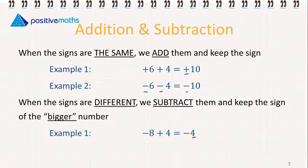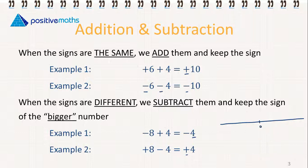We keep the sign of the bigger number. A second example: plus 8 minus 4 — different signs means we subtract and keep the sign of the bigger number, so we keep the plus. The best thing to do when getting familiar with addition and subtraction of integers is to use your number line. Draw a quick number line at the side of your page. For example, if you're saying 2 minus 3 — you start at 2, and subtracting means going to the left: minus 1, minus 2, minus 3. So 2 minus 3 gives you minus 1. Our signs are different, we've subtracted the numbers and kept the sign of the bigger number.